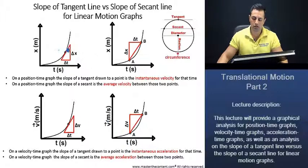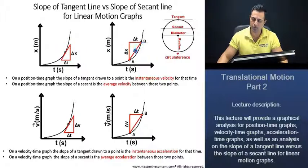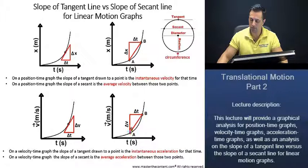To contrast the two graphs: this graph here is going to be the slope of the tangent, and this graph here is going to be the slope of the secant, because it's crossing two points and the tangent is crossing one. And again, this is going to be the tangent graph, and this one is going to be the secant.